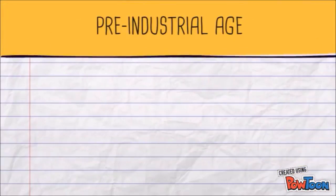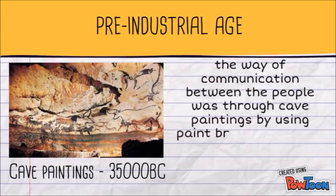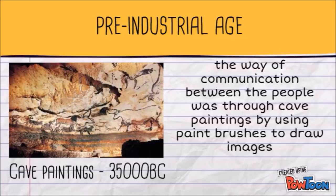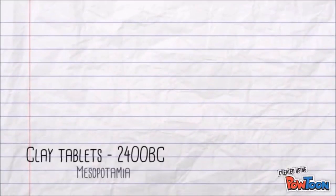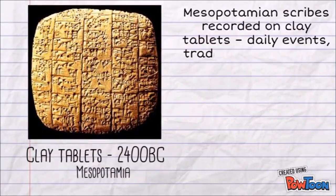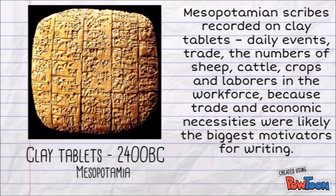In the time of prehistoric men, the way of communication between people was through cave paintings, using paint and brushes to draw images. Another form of media made in the pre-industrial age were clay tablets in Mesopotamia in 2400 BC. More than 5,000 years ago, people living in Mesopotamia developed a form of writing based on pictograms to record and communicate information about crops and taxes.